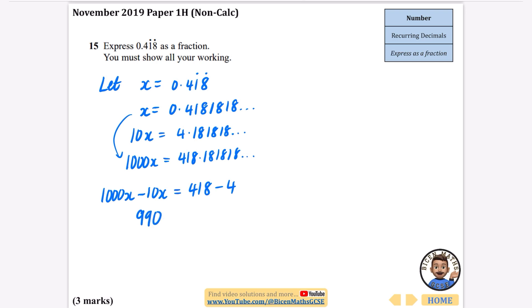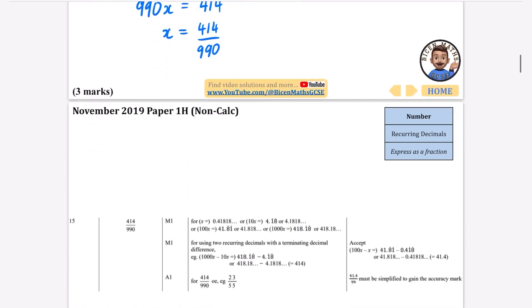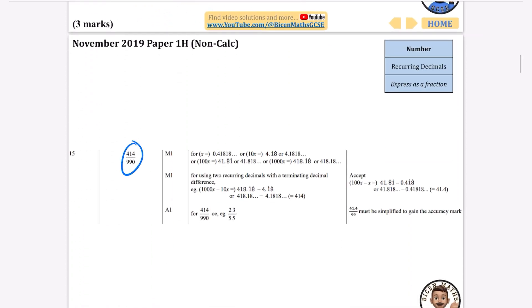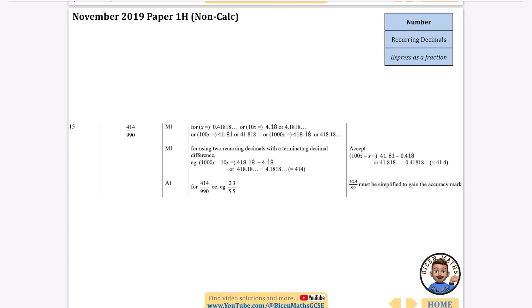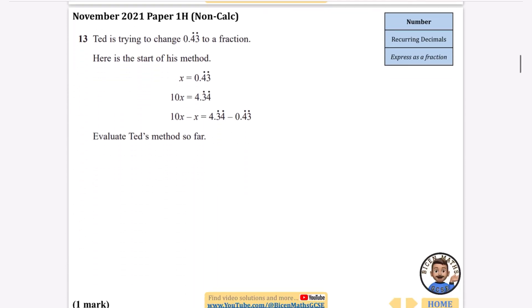So I just have 418 take away 4, all the recurring decimals go, so I get 990x equals 414. To express it as a fraction it is 414 over 990. It doesn't say to express it as a fraction in its simplest form, so technically we could leave it like this. The mark scheme says you could simplify it down to 23 over 55 if you wanted to, but it didn't ask you to, so I wouldn't waste the time doing it.